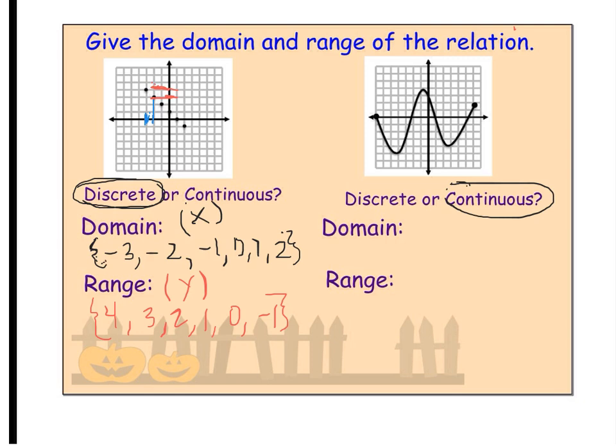So, the easiest way to do it is if we're thinking domain. So, I'm talking about x's. If it's a continuous graph, the easiest thing to do is to find the smallest x value. So, that's here. And the biggest x value, which is here. That is going to set the boundaries for our inequality.